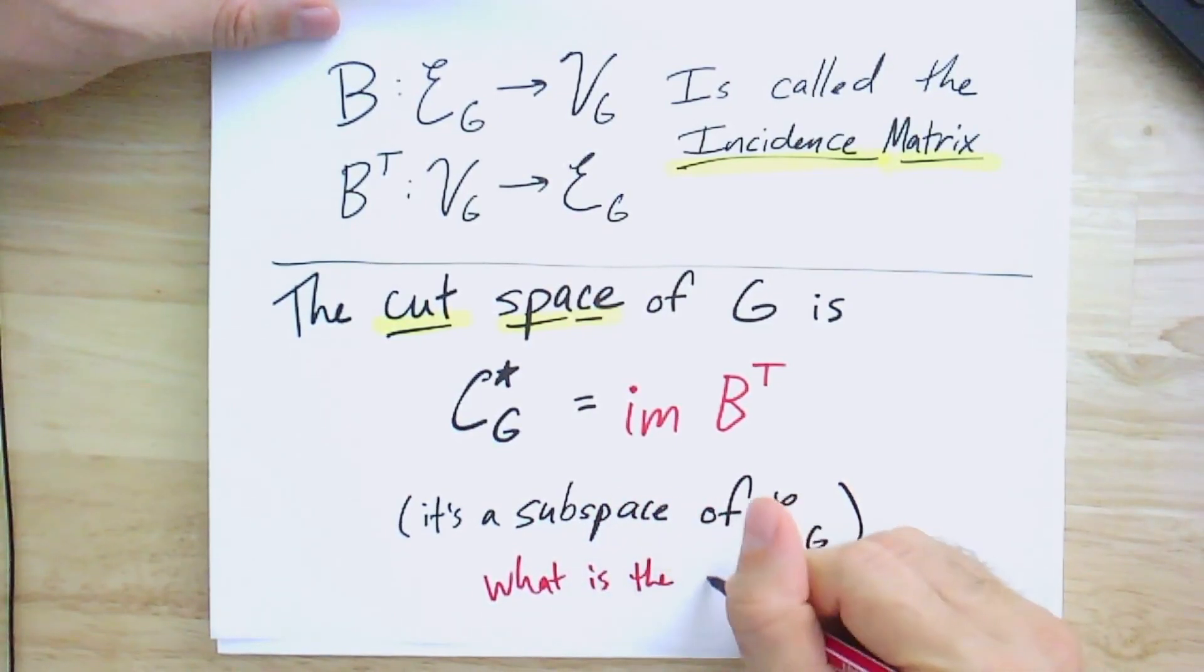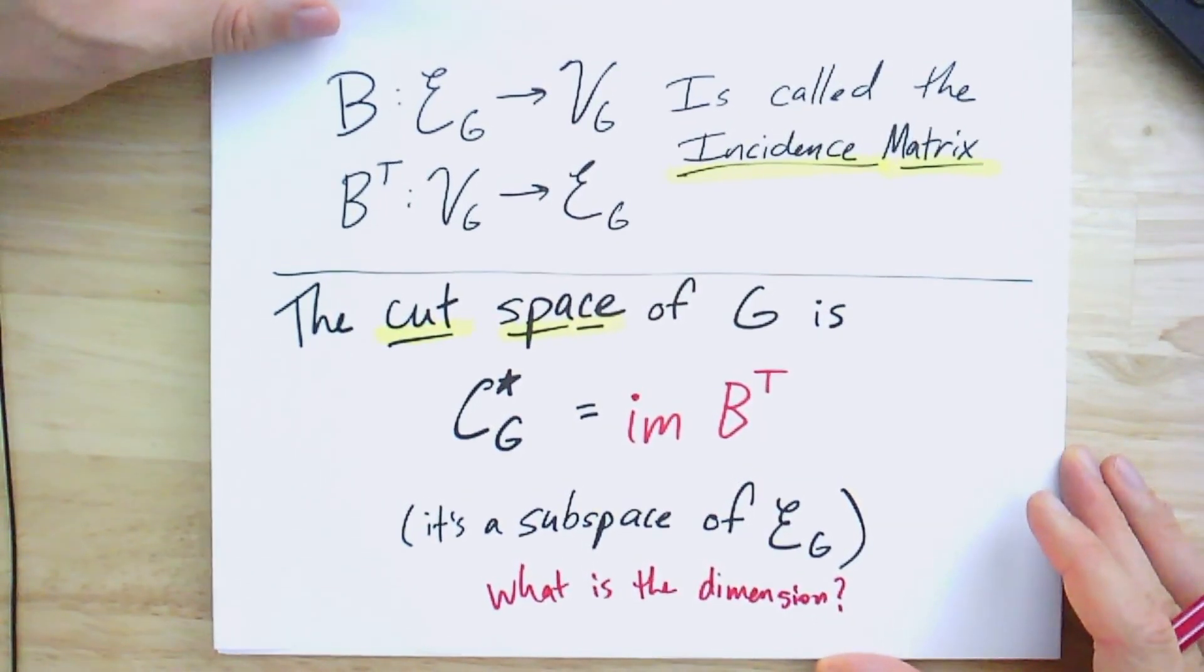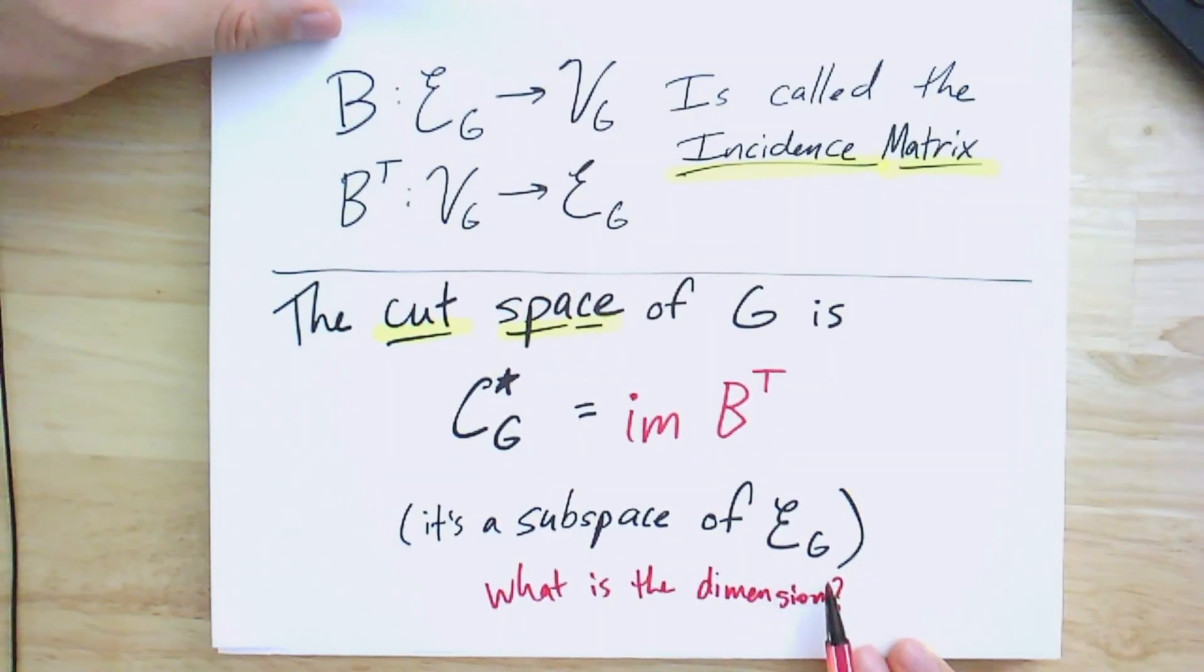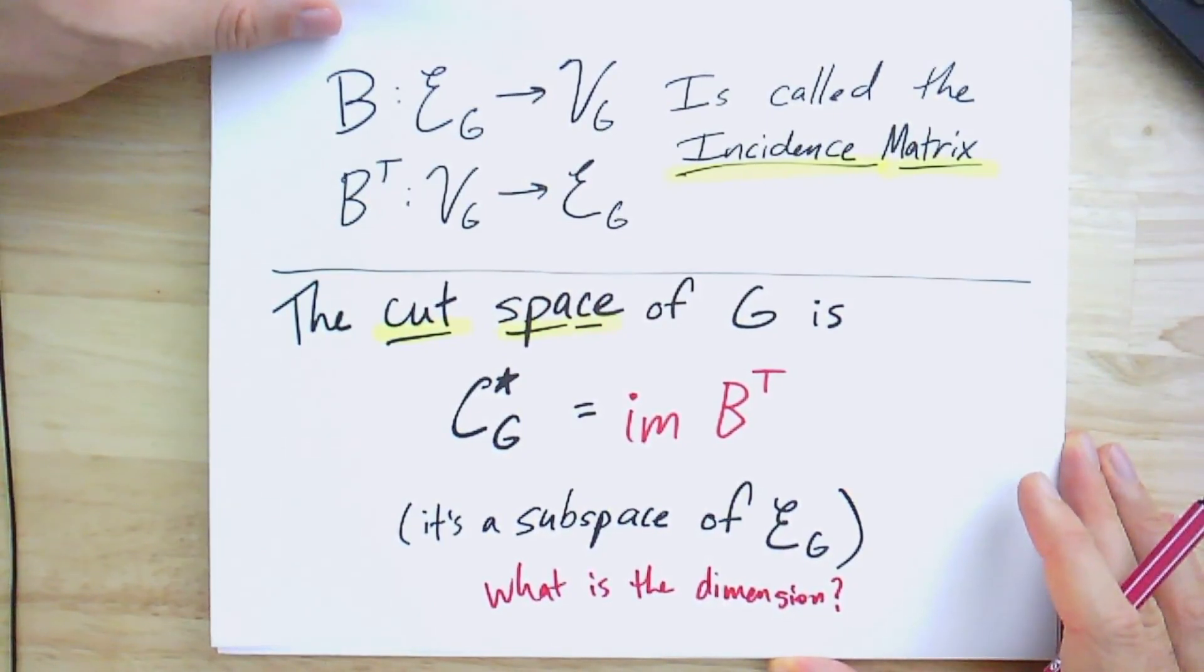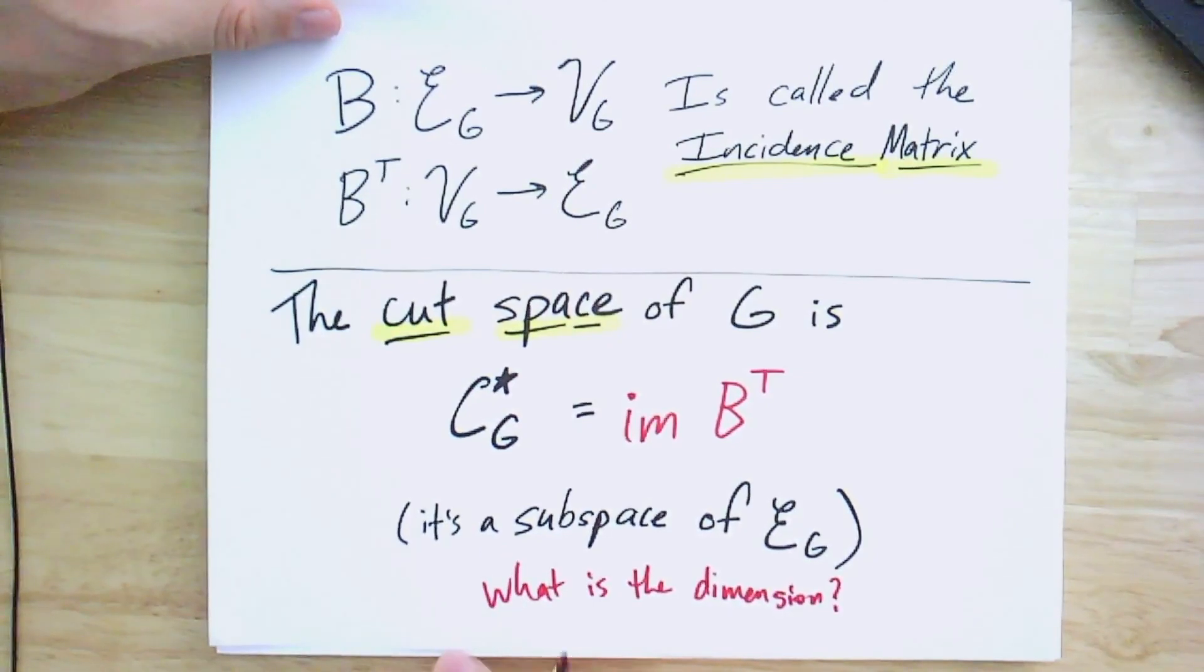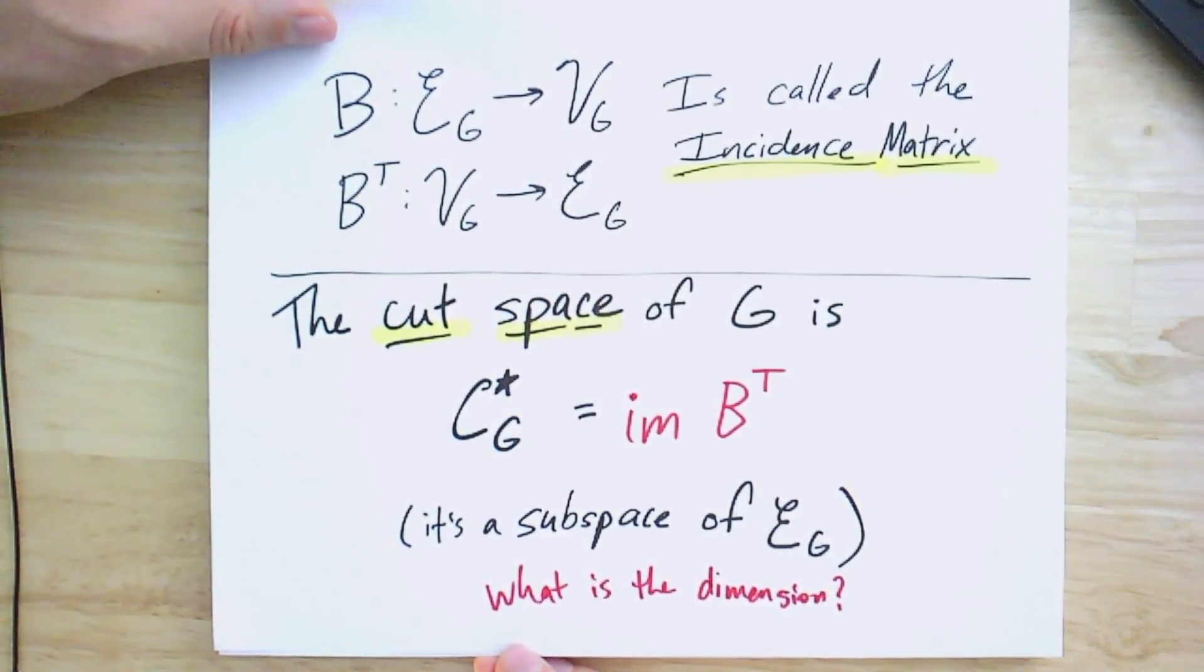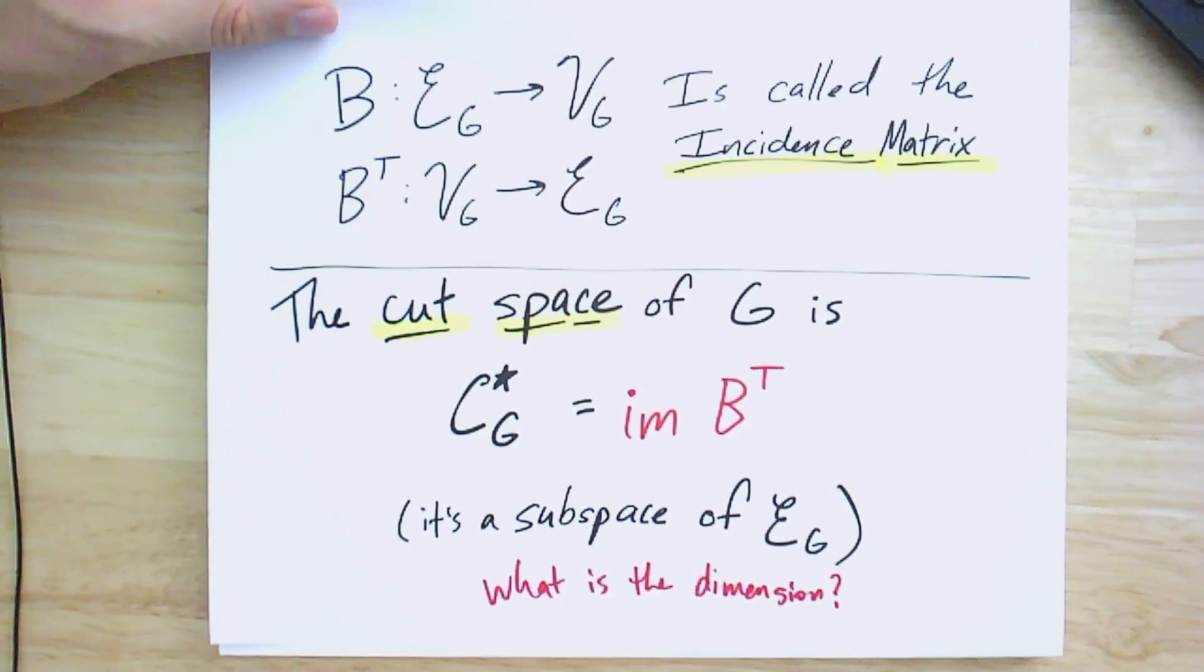And you might ask the following question. What is the dimension of this cut space? And it's not all of EG. So it doesn't have dimension M. You might think it has dimension N because it's coming from the vertex set. And you could perhaps try to think about each vertex as a single cut and define a basis by the image there. But that doesn't quite work either. We'll dig into this a little bit later. But that gives us our first and second and third vector spaces that we might associate with a graph. The vertex space, the edge space, and now the cut space.